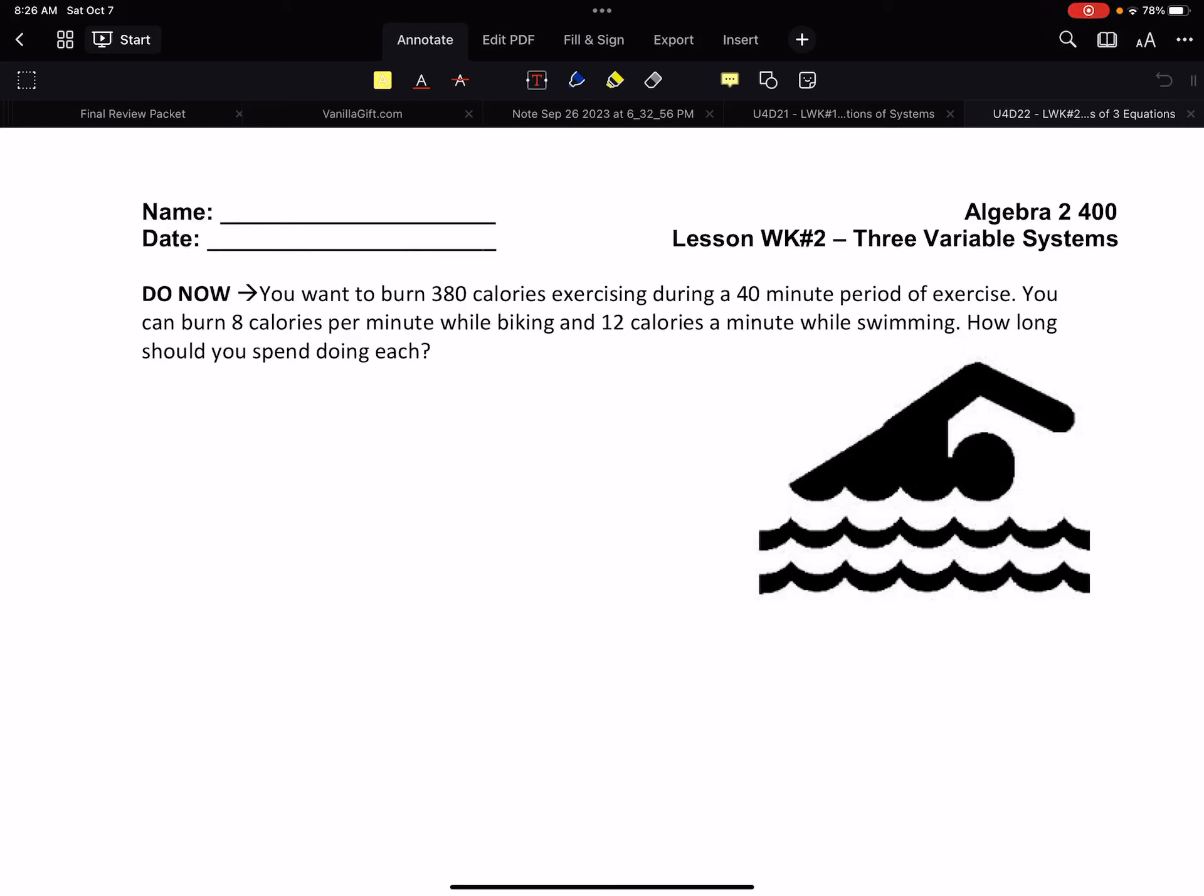Starting off this section with a word problem. You want to burn 380 calories exercising during a 40-minute period of exercise. You can burn 8 calories per minute while biking, 12 calories per minute while swimming. So here's our scenario.